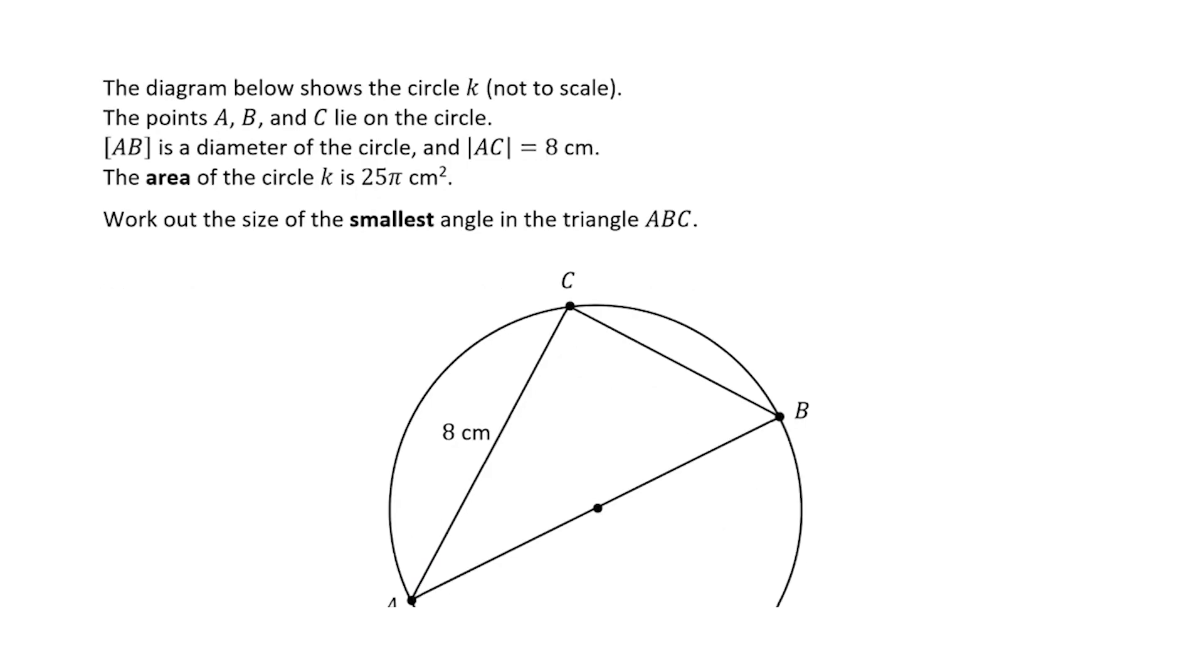We are told that the diagram below shows a circle K. A, B, and C are on the circle. We're told that AB is the diameter of the circle, and that's important to note. AC is 8 centimeters. The area of the circle is 25π centimeters squared. We're asked to work out the size of the smallest angle in the triangle ABC.